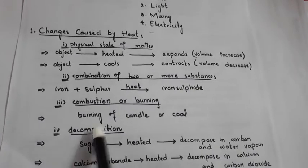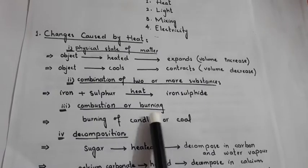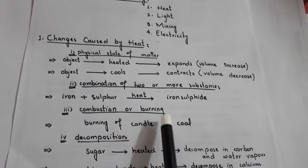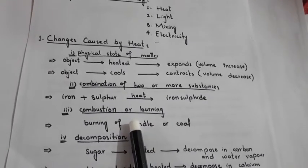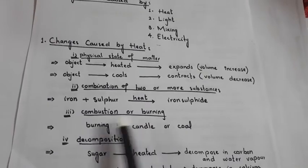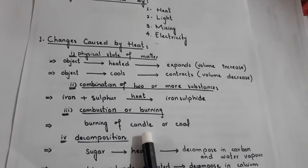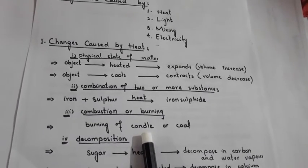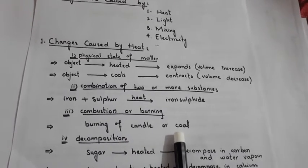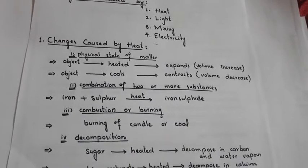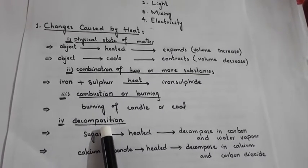The third change due to heat is combustion, or burning. Combustion is the combination of a substance with oxygen when it is heated. For example, when we burn a candle, it combines with oxygen and burns out. The same applies to coal. So burning of a candle and coal are examples of combustion.